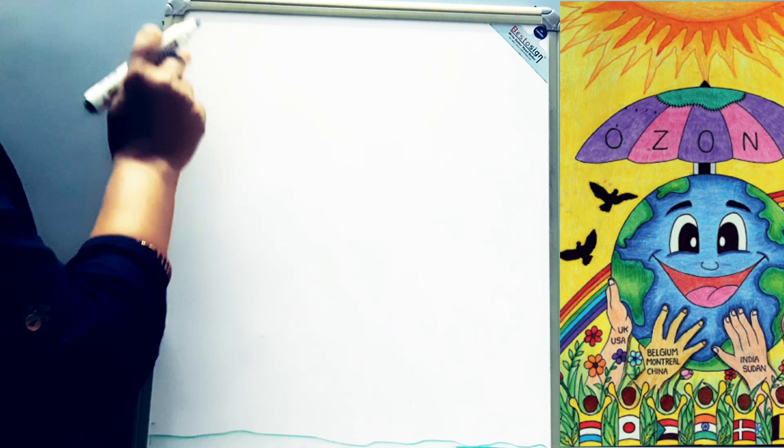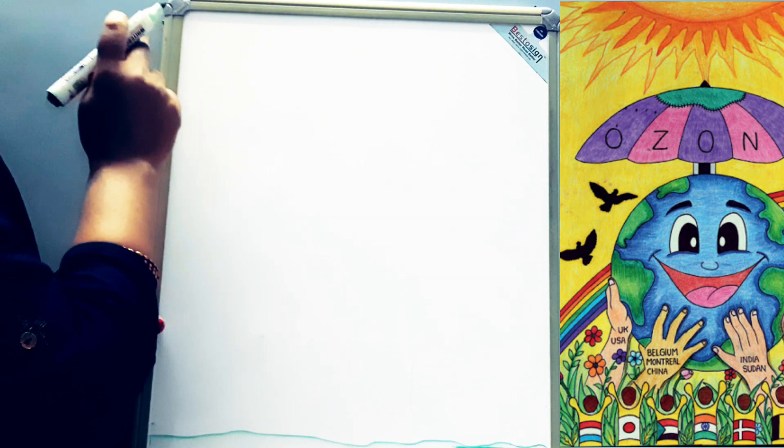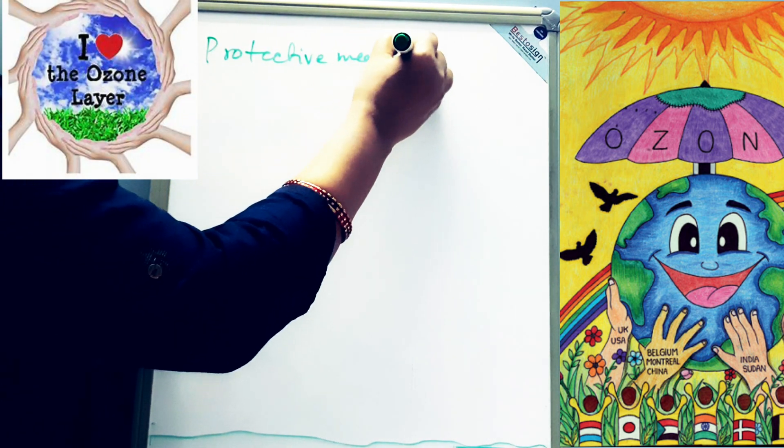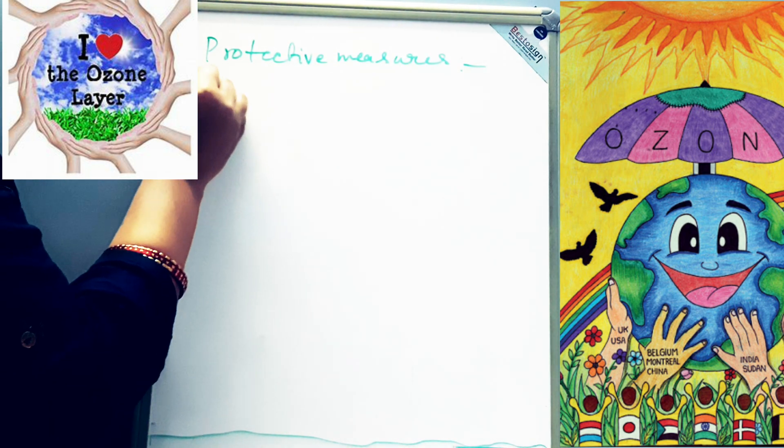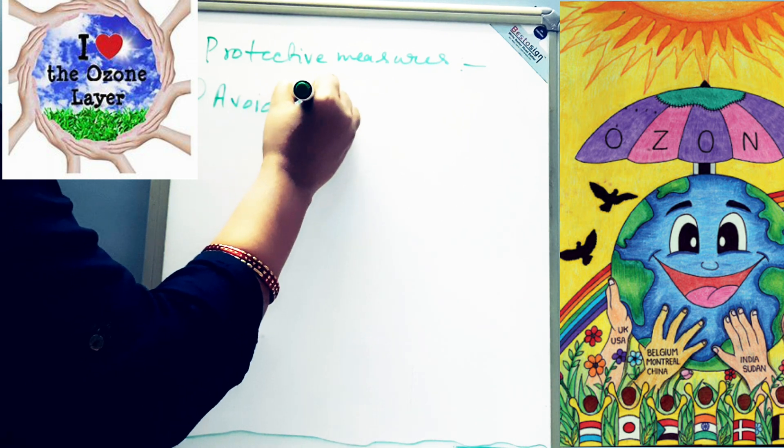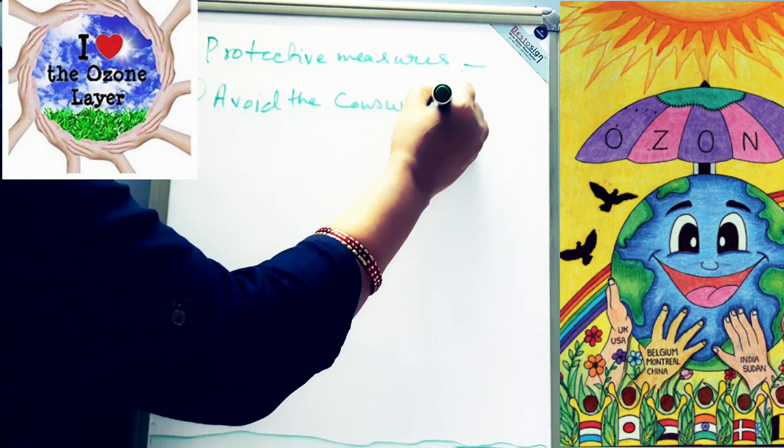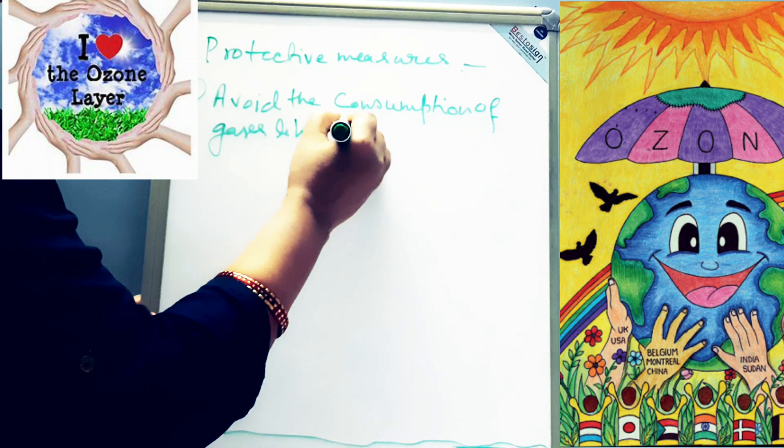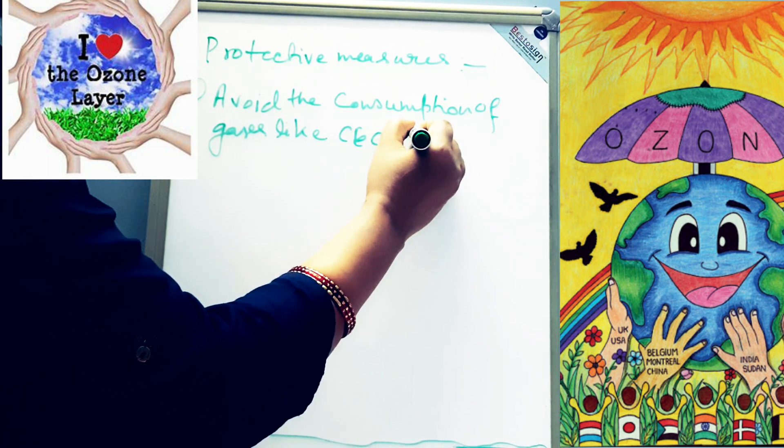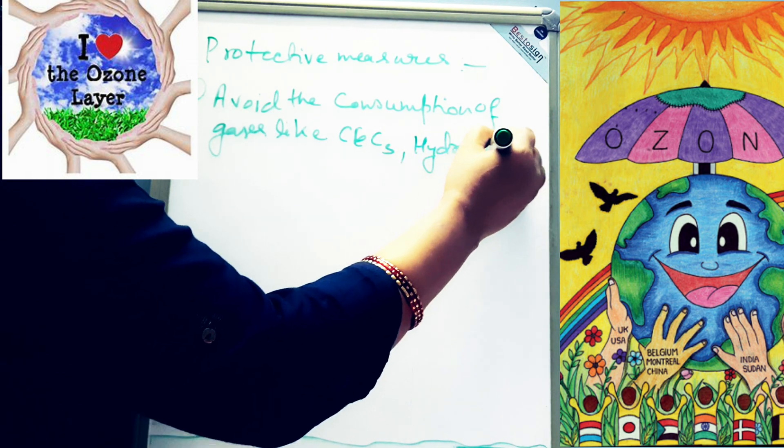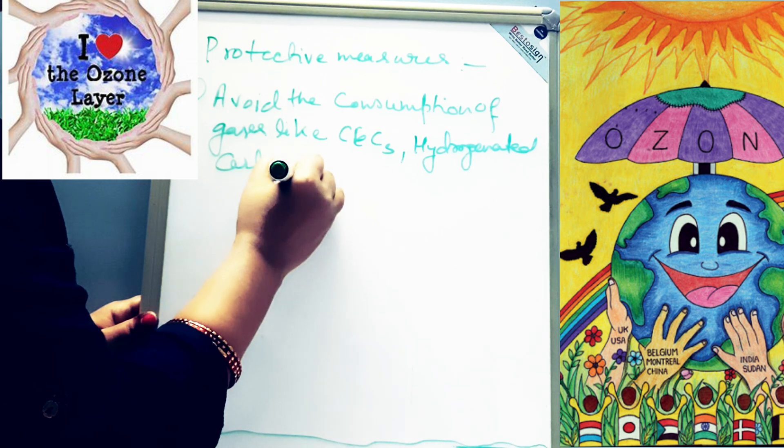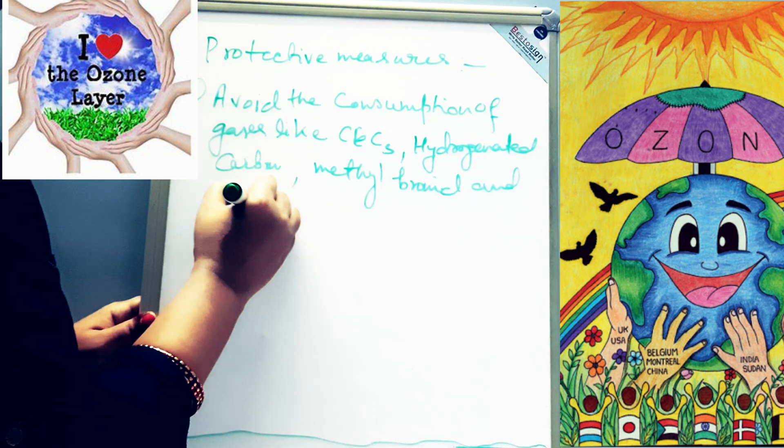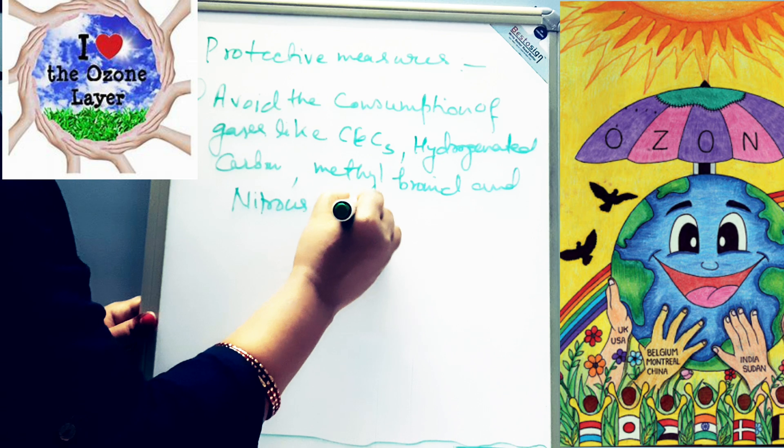Now we'll see what we can do from our side to protect our ozone layer. Protective measures: First, we can avoid the consumption of gases like CFCs, hydrogenated carbons, methyl bromide, and nitrous oxide. These are called ODS.